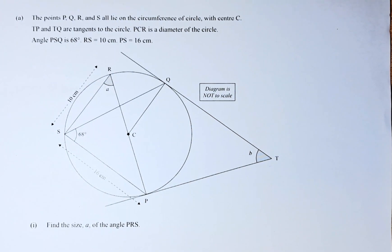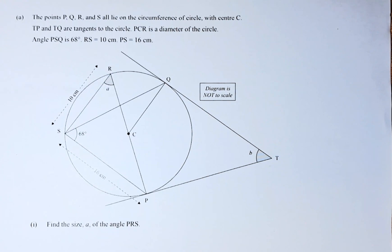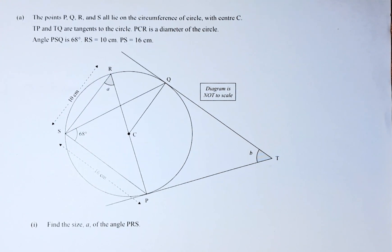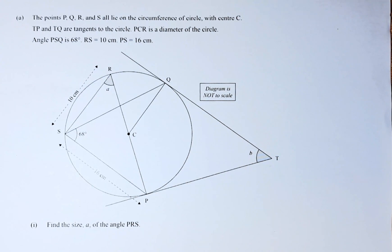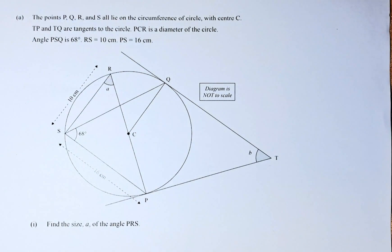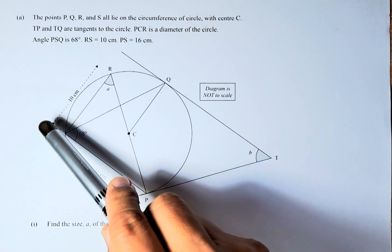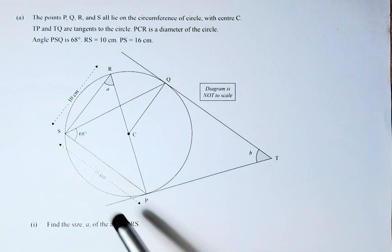The points P, Q, R, S all lie on the circumference of the circle with center C. TP and TQ are tangent to the circle. PCR is the diameter of the circle. Angle PSQ is 68 degrees. The length RS is 10 and PS is 16.